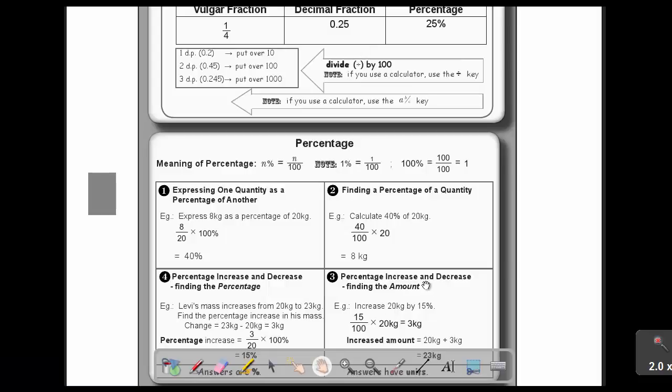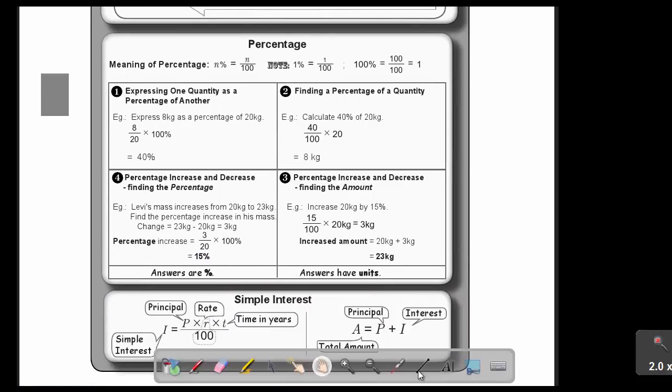Now, if you can recall from Grade 8, we had this summary. Let's call number 1. If you express one quantity as a percentage of a number, let's call it method 1. So express 8 kg as a percentage of 20 kg, then it's just 8 over 20 times 100%, and that's giving me 40%. Now remember, if I want to put this sum into reverse, I can say calculate 40% of 20. So then I will say 40 divided by 100, and then multiply by the 20, and that would give me 8 kg. Let's call it method 2.